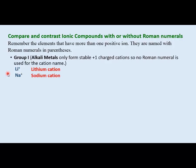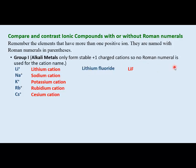Sodium, again in Group 1 alkaline metals, just forms a +1 charge, so I don't use Roman numerals. Potassium, rubidium, on down to francium, they only form stable +1 charged cations — no Roman numerals. For example, sodium chloride: a +1 charge cation and a -1 chloride gives a 1:1 ratio, so I just write sodium chloride with no Roman numeral.